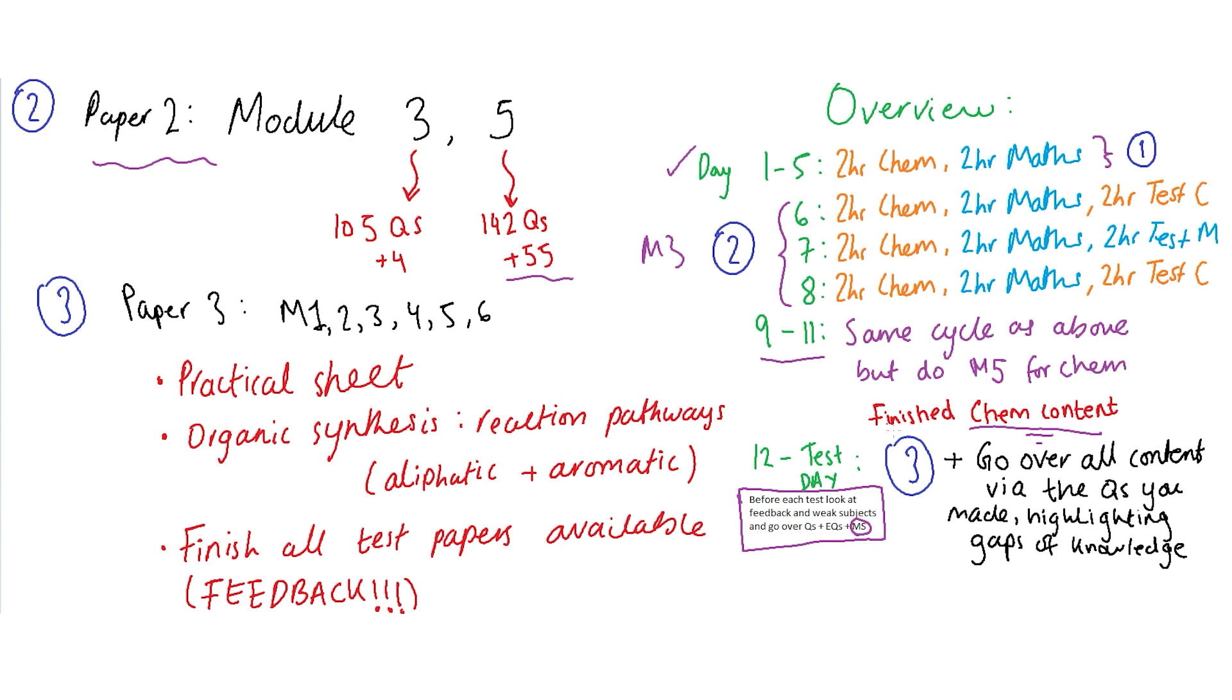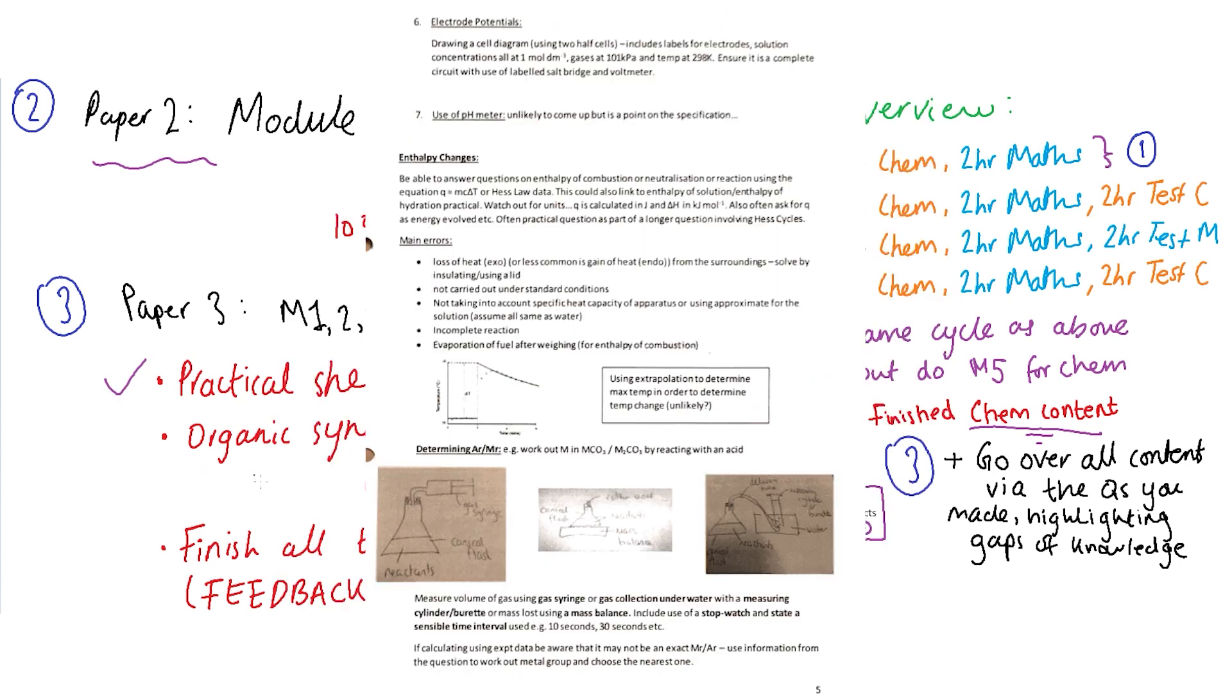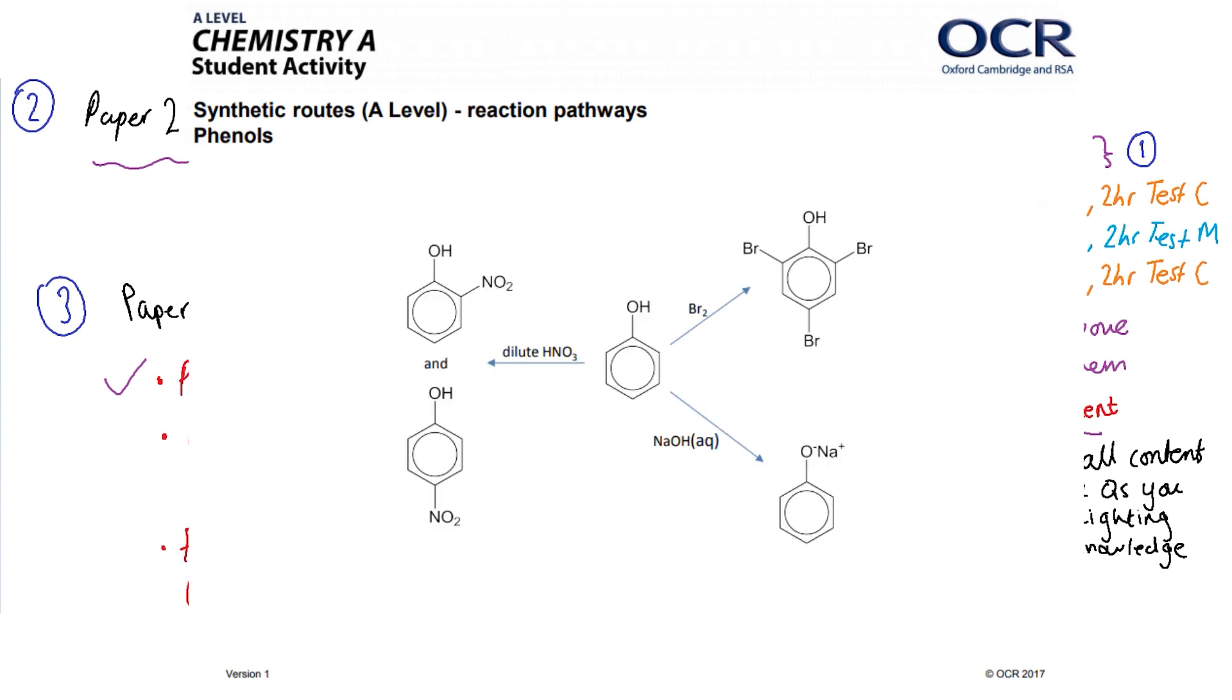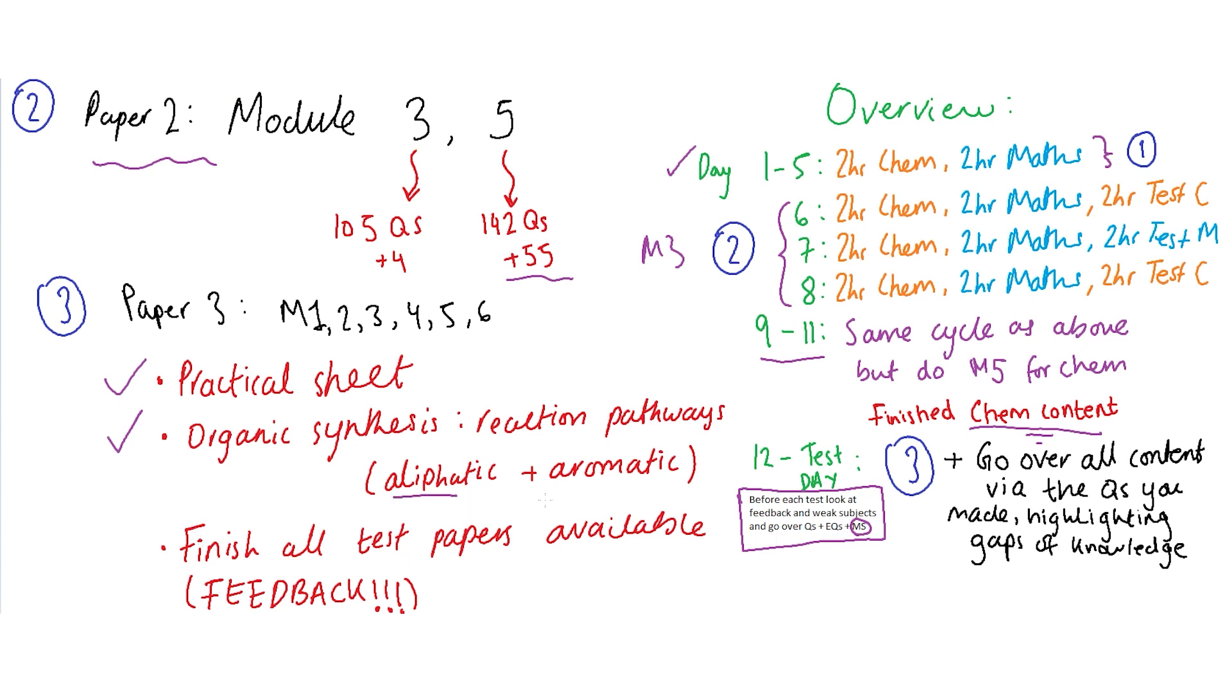So before every test you do make sure you go through all the relevant feedback that you have on that test paper on those modules that you're getting tested on. So now when you're going over all the content via the questions you made you also want to do this. So for paper 3 because you've already done all the notes for module 2 to 6 and by the way for module 1 what module 1 is is the practicals. So this is where you start refining on the knowledge that you have to know. So here you've got the practical sheet and I'll link down to a practical sheet that you guys can use. And you need to also go through the organic synthesis so reaction pathways and all those different things you have to memorize all on two sheets of paper. So it's linked also below so for aliphatic and aromatic.